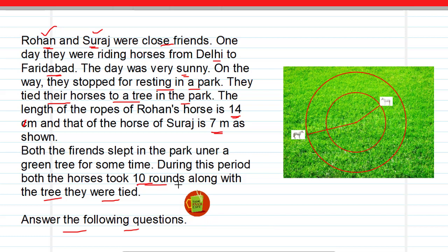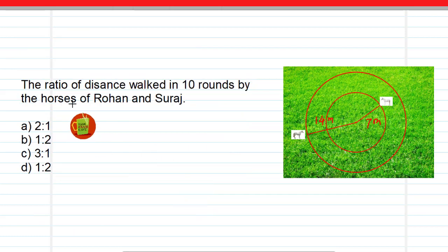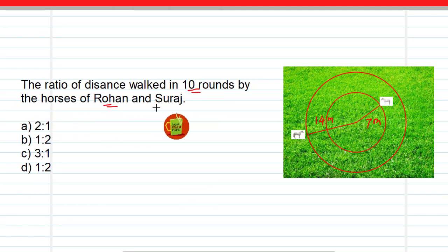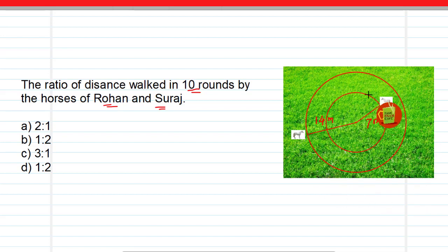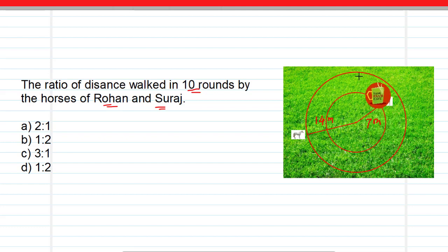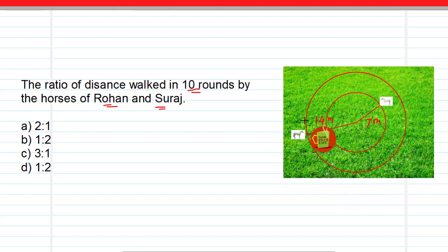The first question is: what is the ratio of the distance walked in 10 rounds by the horses of Rohan and Suraj? Rohan's horse walked 10 rounds around the tree, as did Suraj's horse. Therefore, the distance covered in one round is equal to the circumference of the circle. Since they took 10 rounds, the total distance covered equals 10 into the circumference, which is 2πr.